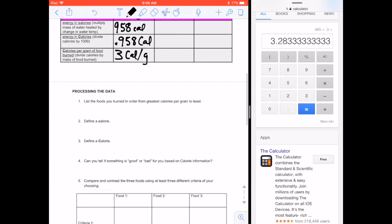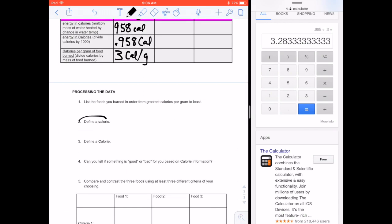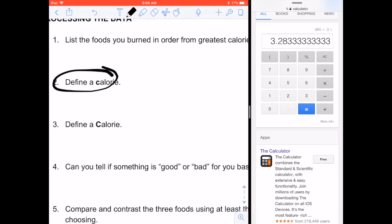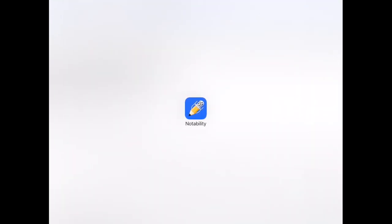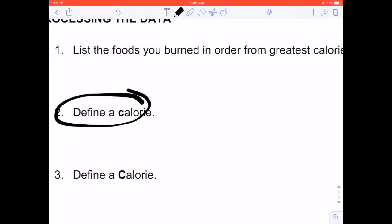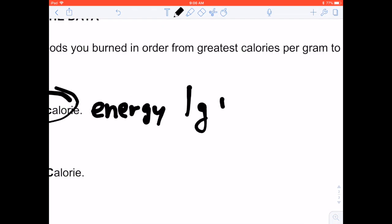Alright, there's my calculations. To find a little c calorie, that's the amount of energy it takes to raise one gram of water, so not very much, one degree Celsius.